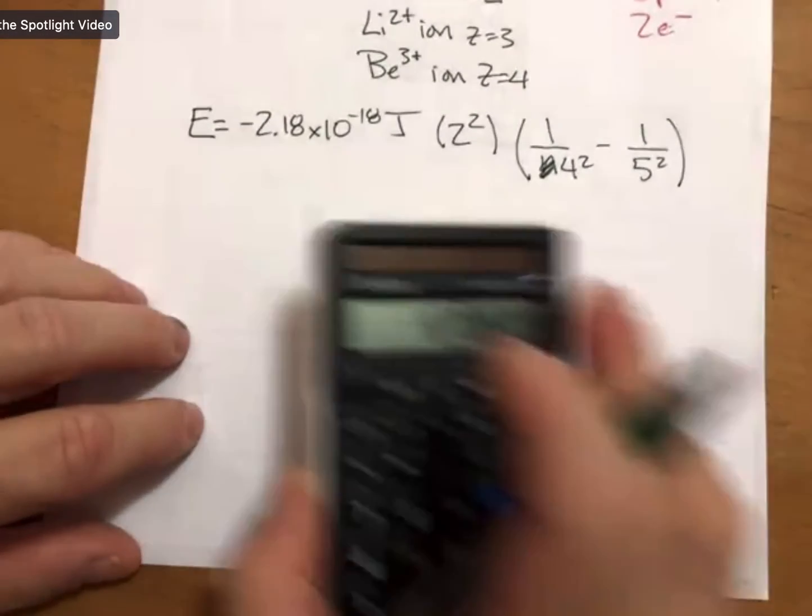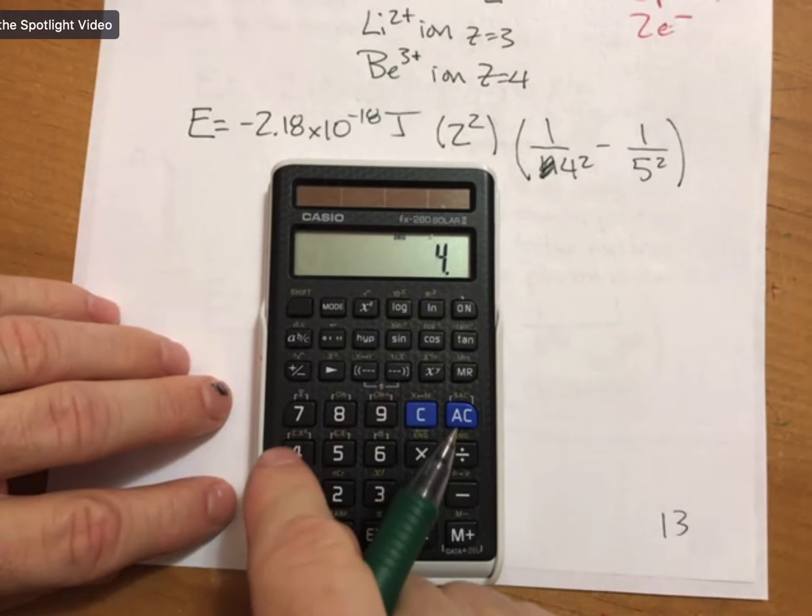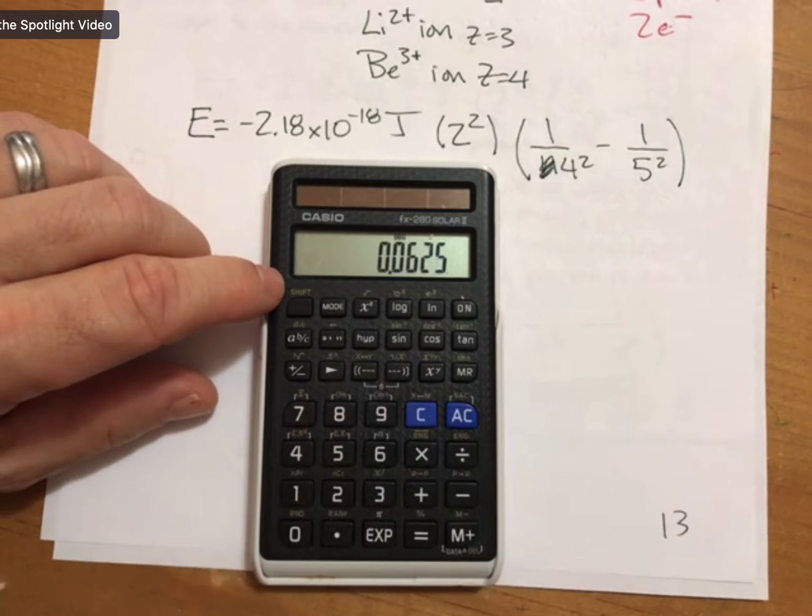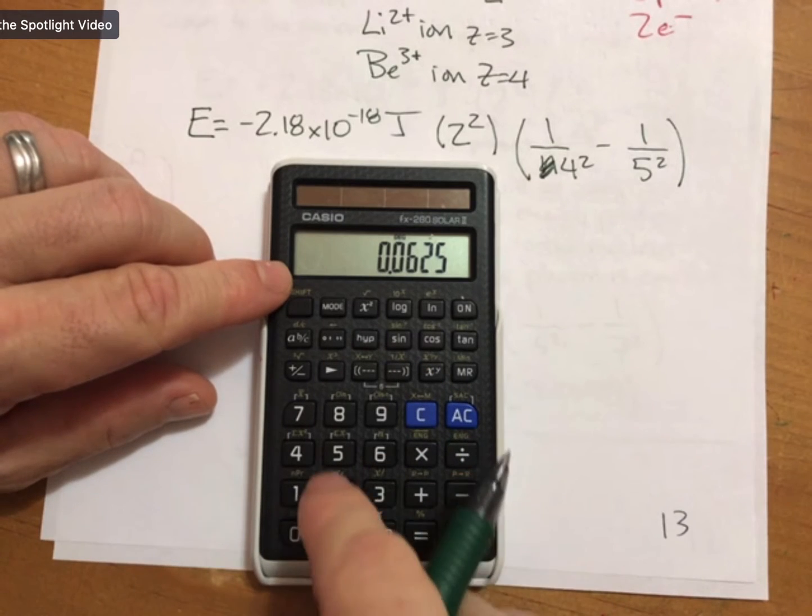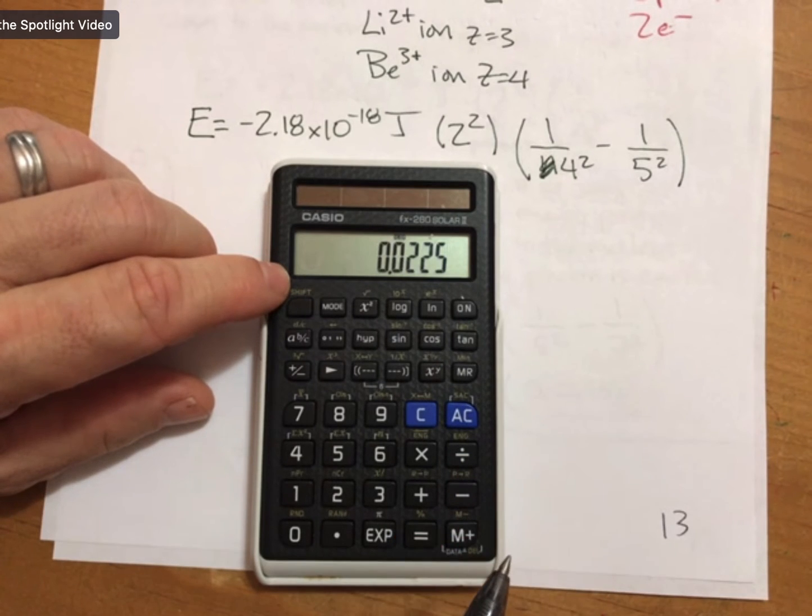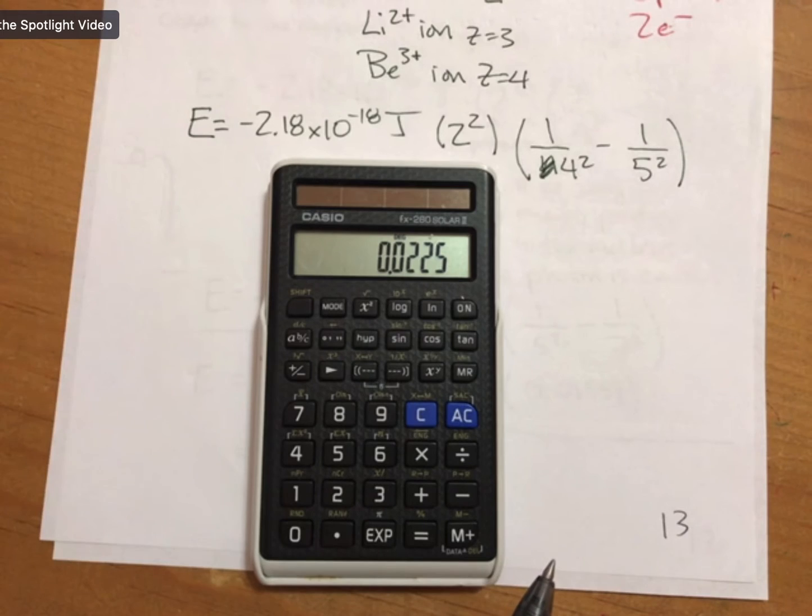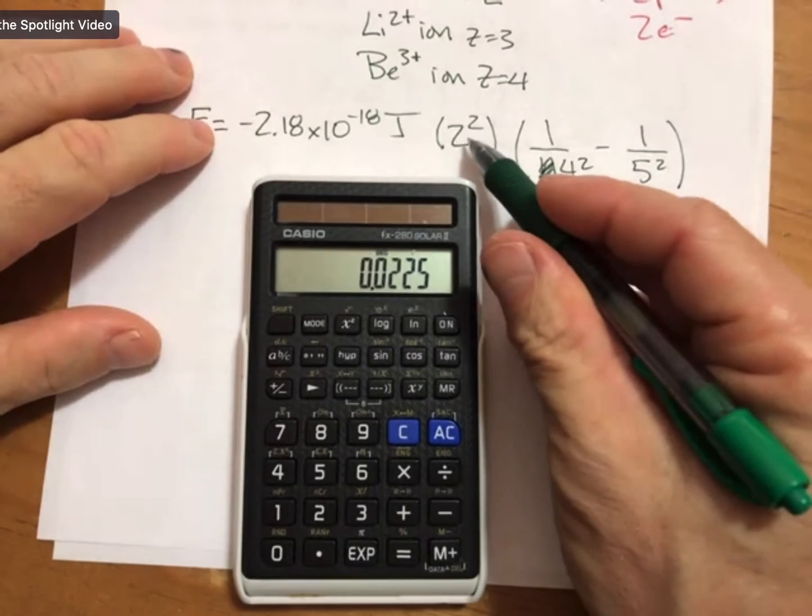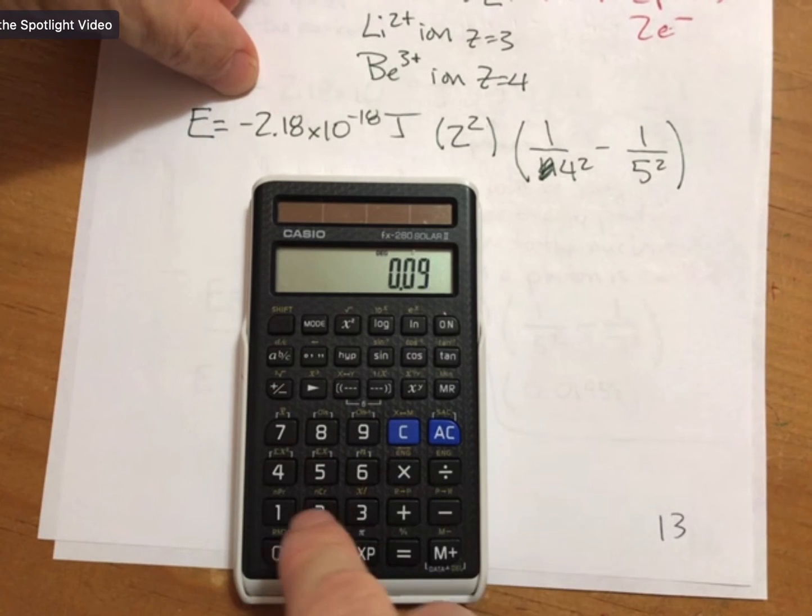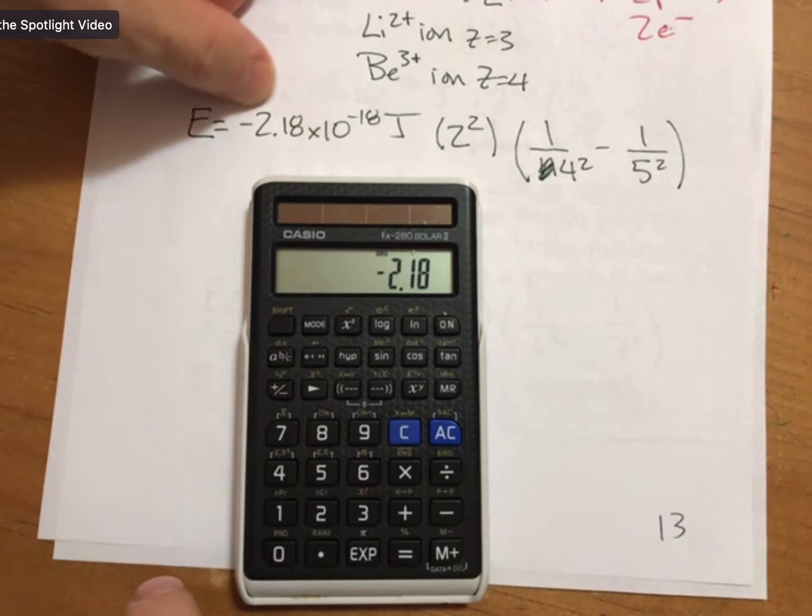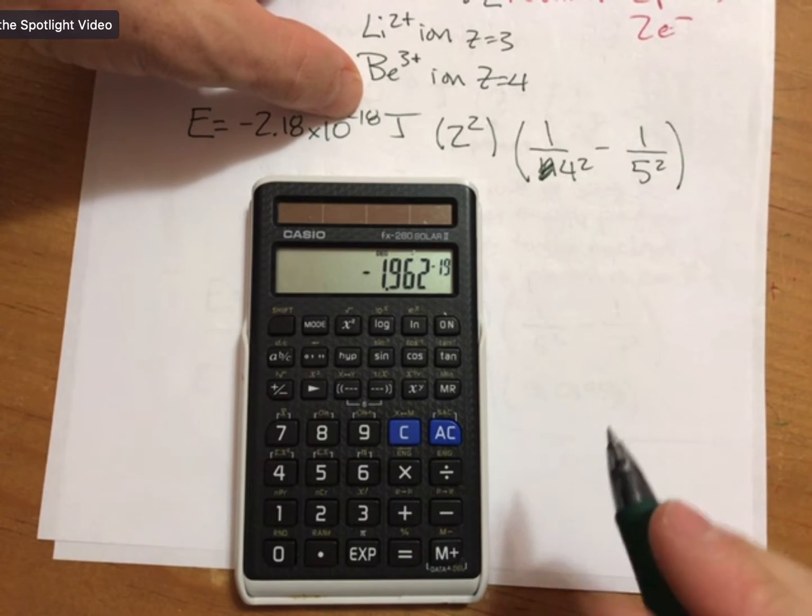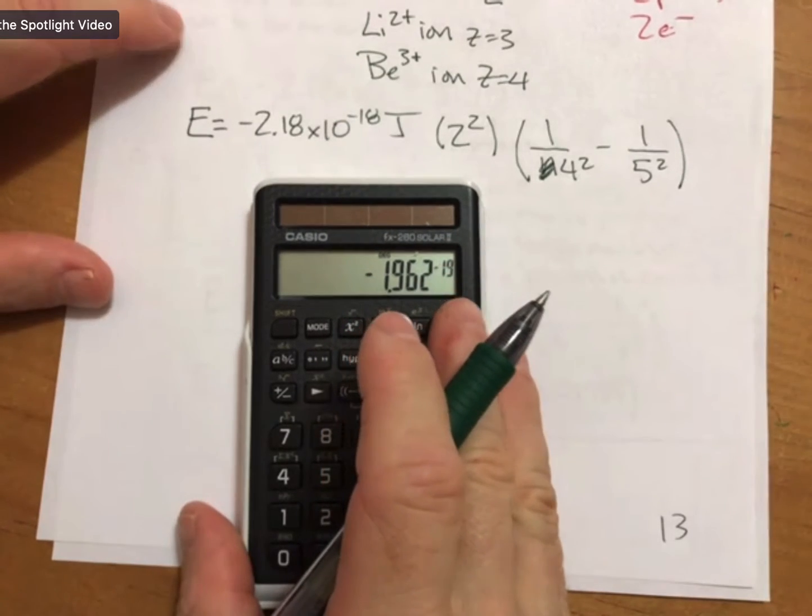And now, using our calculator, so 4 squared button, shift 1 over x button, minus 5 squared, 1 over x, I get 0.0225 times 2 squared, or 4, times 2.18 negative, exponent 18 negative, and I get 1.96 times 10 to the minus 19